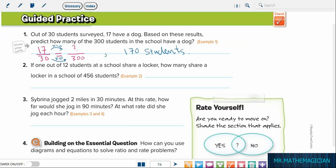Problem 2: If one out of 12 students at a school share a locker, how many share a locker in a school of 456 students? So let's summarize the problem as equal fractions. One out of 12 students will share a locker, so how many out of 456?